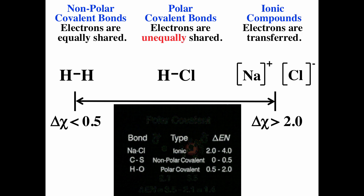Sodium chloride, or table salt, is ionic — it has an electronegativity difference greater than 2. Carbon-sulfur bonds are nonpolar, with an electronegativity difference less than 0.5. Hydrogen-oxygen bonds are polar, with a difference in electronegativity between 0.5 and 2.